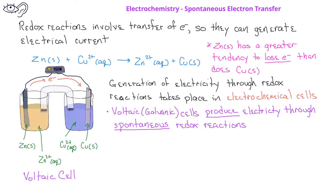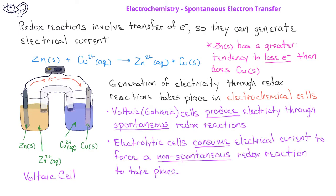A voltaic, or sometimes called a galvanic cell, is an electrochemical cell that produces electrical current because it has a spontaneous chemical reaction. A second type of electrochemical cell, called an electrolytic cell, consumes electrical current to force a non-spontaneous chemical reaction to take place. We'll discuss electrolytic cells in a later video.